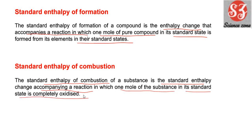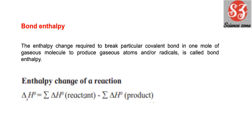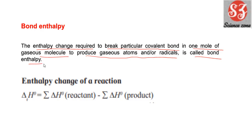Next है bond enthalpy: यह वो enthalpy change है जो require होता है break करने के लिए एक particular covalent bond, जहाँ one mole of gaseous molecule produce होकर gaseous atoms और radicals देता है। Bond enthalpy मतलब one mole of gaseous molecule को break करके उसको gaseous radical या gaseous atom में convert करने के लिए जो enthalpy लगेगी। Enthalpy of chemical reaction = sum of enthalpy of reactants in standard state minus enthalpy of products in standard state।